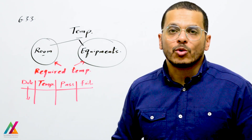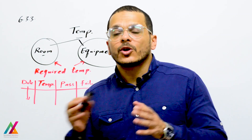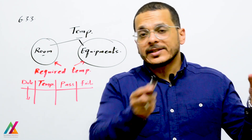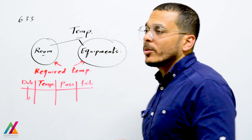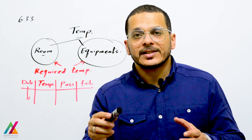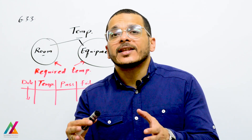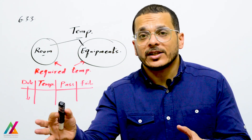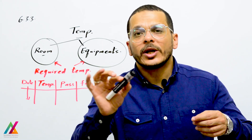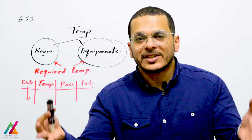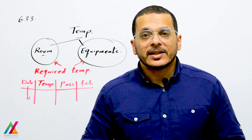You will prepare two forms for temperature traceability: a room temperature recording form and an equipment temperature recording form. Inside these forms, write the required temperature - for example, 20°C ±5 for a room, or -20°C ±2 for a freezer. You will determine and record the temperature daily, and it should be within the accepted criteria.